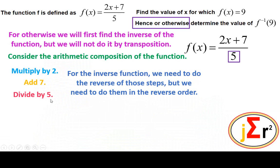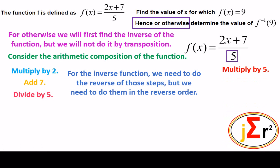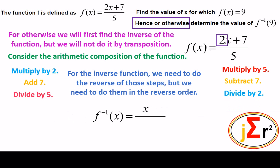For the inverse function, we need to do the reverse of those steps in reverse order. So we go with the reverse of the last step first: multiply by 5. Then, in reverse order, the reverse of 'add 7' is subtract 7. Finally, the reverse of 'multiply by 2' is divide by 2. Steps for the inverse: multiply by 5, subtract 7, divide by 2.